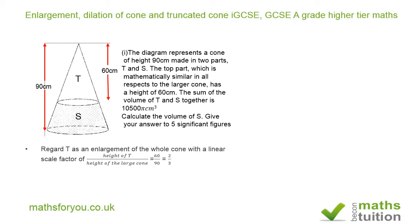The height of T, which is the image, divided by the height of the large cone, which is the object, is 60 divided by 90, which equals 2/3. The height is a linear measurement, so the linear scale factor is 2/3.